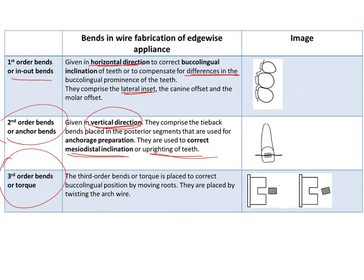The third order bend is also known as the torque bend. It is given to express torque and bring about correction in the root position of the tooth. This is done by placing a twist in the wire. So whereas first order bends are horizontal and second order bends are vertical, third order bends are brought about by twisting the wire. When the twisted wire is engaged into the bracket slot, the bracket also experiences that twisting motion, bringing about correction of the torque of the tooth.